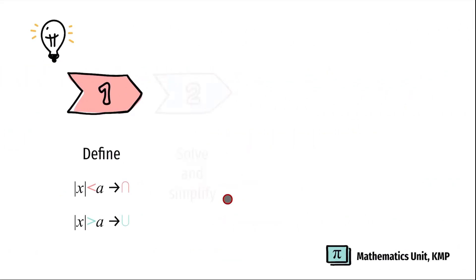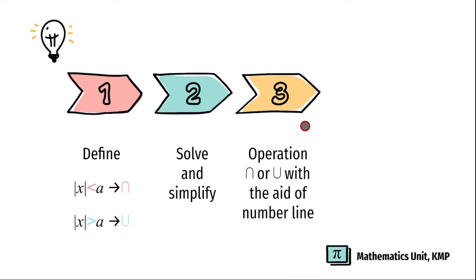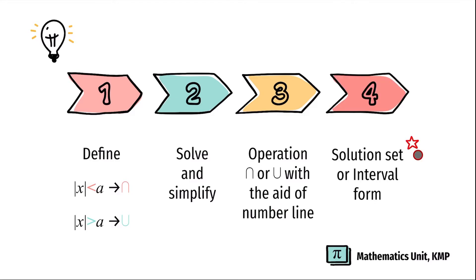The second step, we're going to solve and simplify our linear inequalities. Next, we're going to do the operation of intersection or union with the aid of a number line. And the final step, we're going to write down the answer in solution set or interval form unless stated.